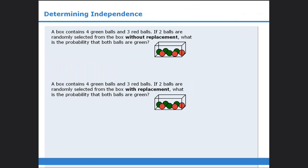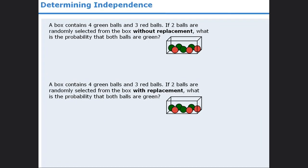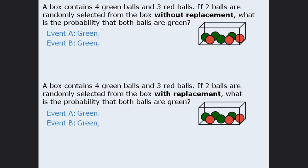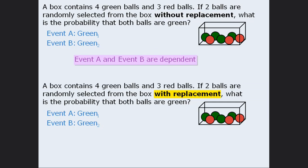In a previous lesson, we looked at two questions that both involve selecting two balls from a box. In the first question, we select the two balls without replacement, and in the second question, we select two balls with replacement. For both questions, we defined event A as selecting a green ball on the first draw, and event B as selecting a green ball on the second draw. For the question with no replacement, events A and B are dependent. For the question with replacement, events A and B are independent.